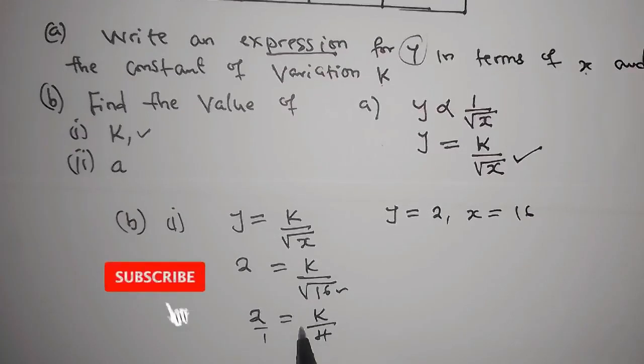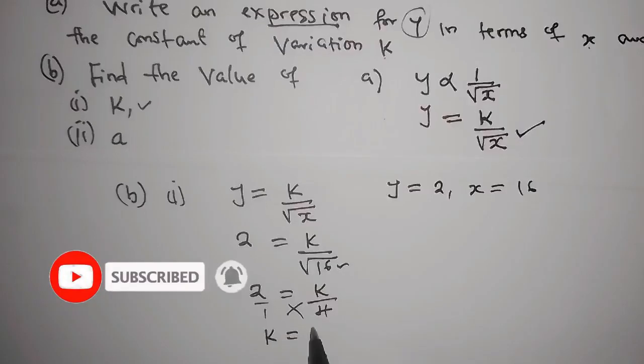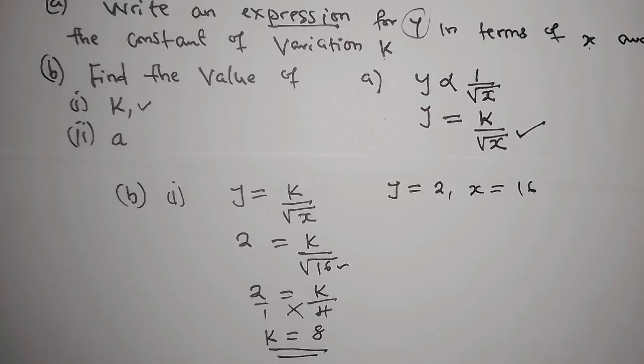So from there now, you can cross multiply. 1 times k is just k. And 2 times 4 is 8. And that is the answer for k.